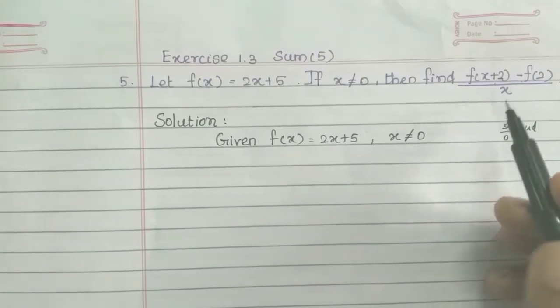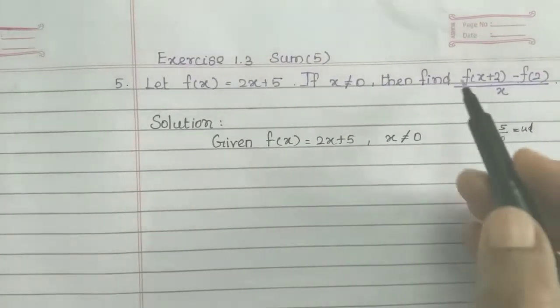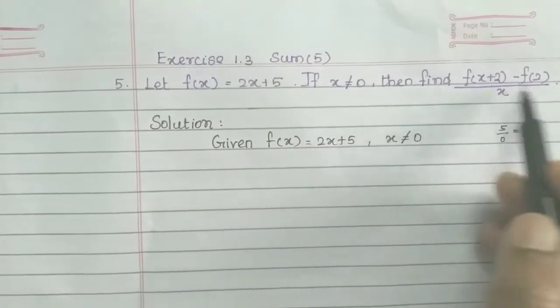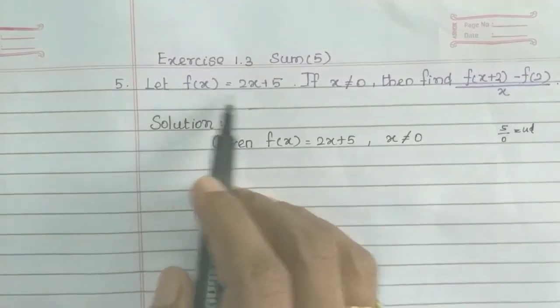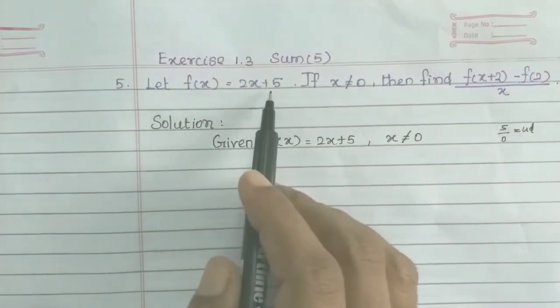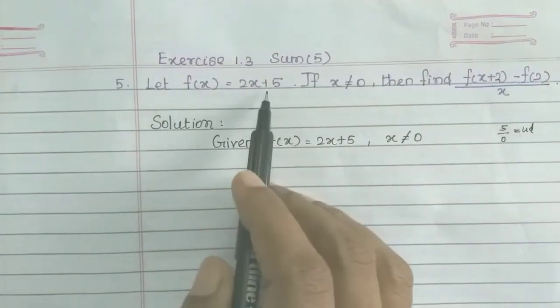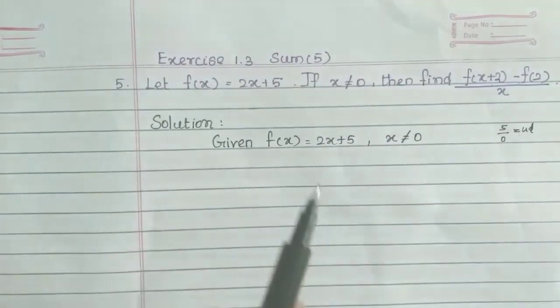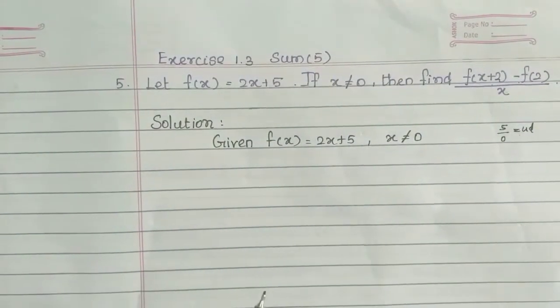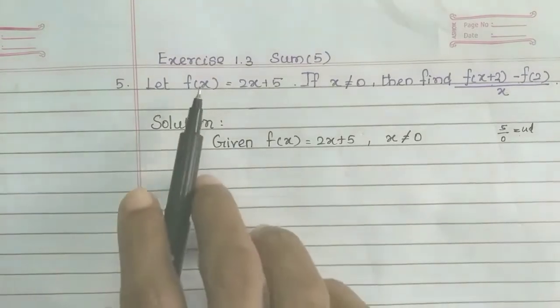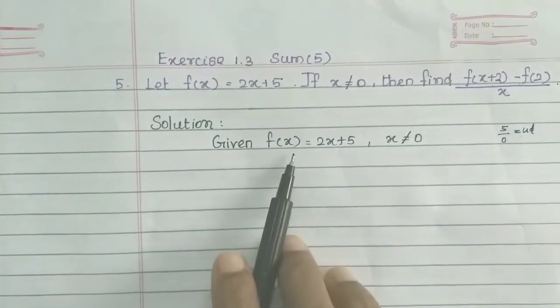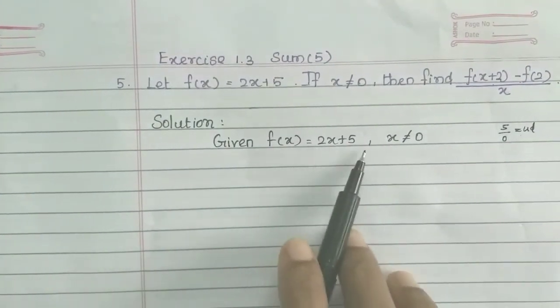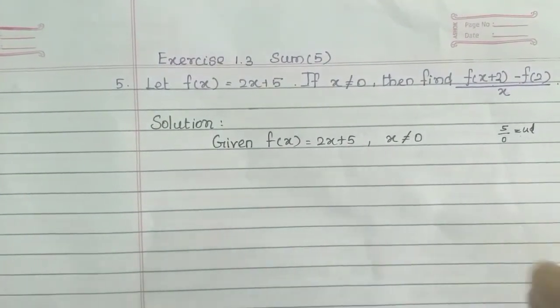If x is not equal to 0, then find the value. f of x equals 2x plus 5.